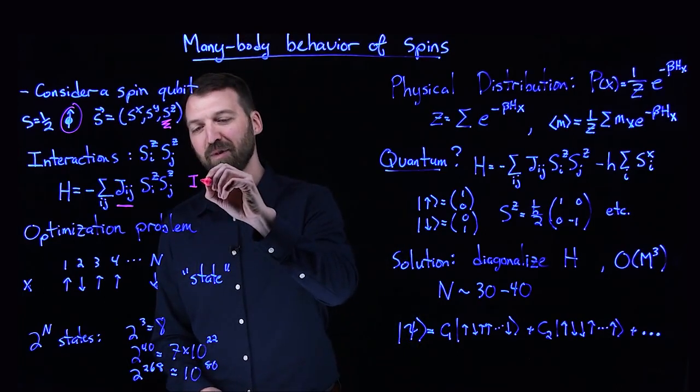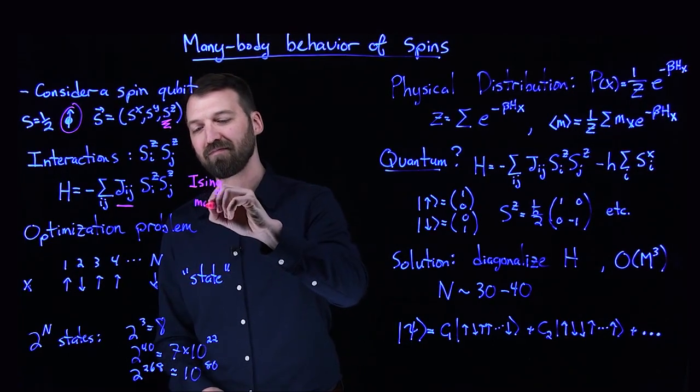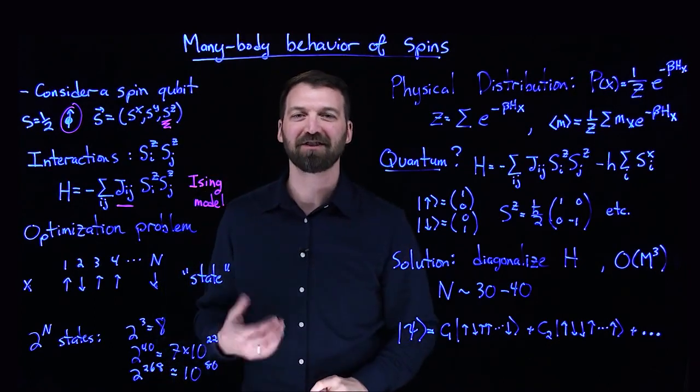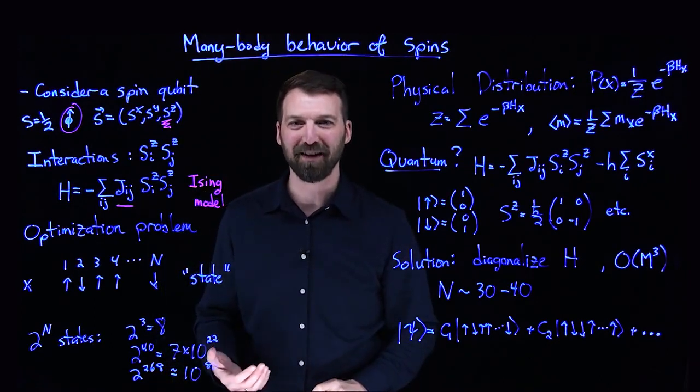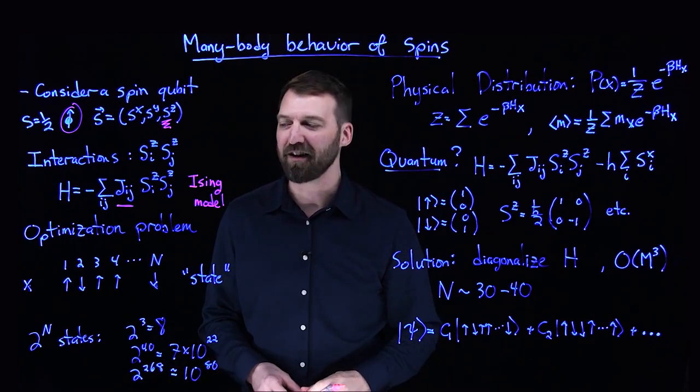This is referred to as something you've probably heard of—the Ising model. The Ising model is the simplest model of interacting spins, yet it is actually very highly complex in and of itself.